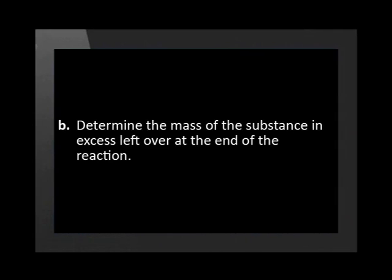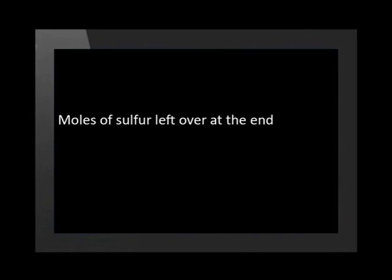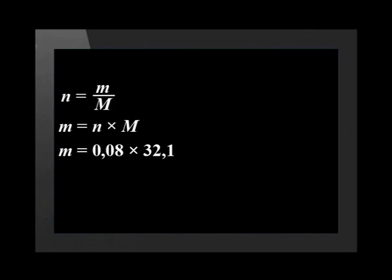Part B of the question says: determine the mass of the substance in excess left over at the end of the reaction. We will start by determining the number of moles of the substance in excess left over. We take the 0.44 moles of sulfur that we started with and subtract the 0.36 moles used in the reaction. This leaves us with 0.08 moles of sulfur left over. Let us now convert this number of moles to mass using the equation n = m / M. We rearrange and substitute our values in. We get an answer of 2.57 grams of sulfur left over at the end of the reaction.